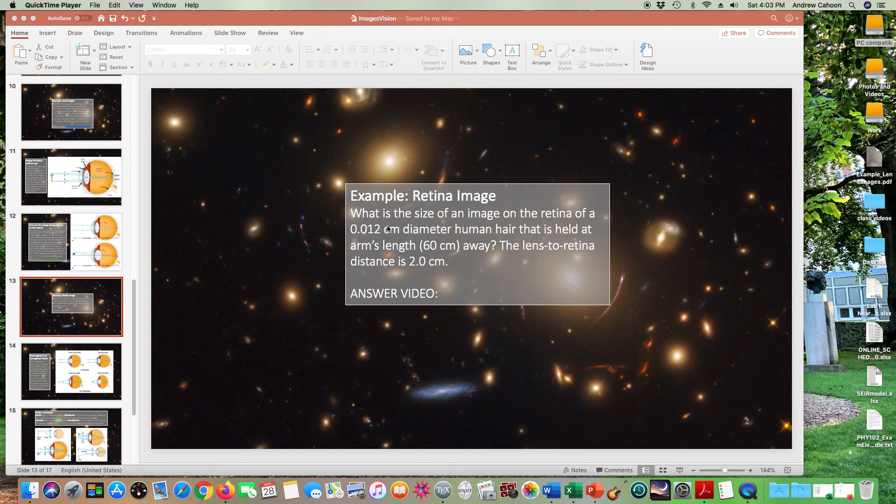Now if we look at the data in the problem, we're thinking about the size of a human hair, the diameter of a human hair, so that's the size of the object that you're looking at. It's held at arm's length away, 60 centimeters away, and we know the lens to retina distance is 2 centimeters.